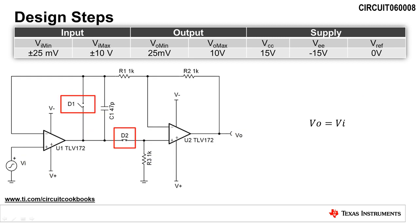First, we will analyze the circuit for positive input signals. Positive input signals forward bias D2 and reverse bias D1. Therefore, D1 is represented as an open circuit, and D2 is represented as a short circuit. In this configuration, U2 acts as a buffer, and the output voltage is equal to the input voltage.